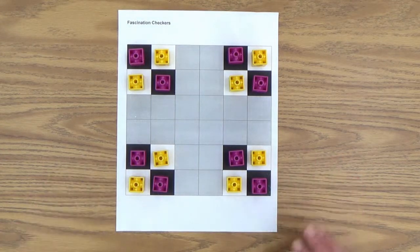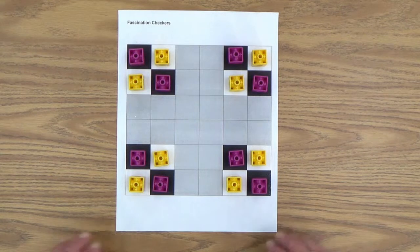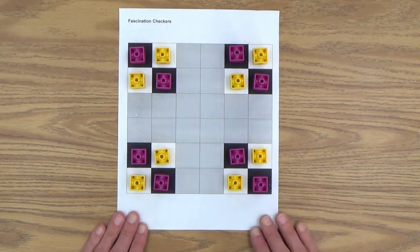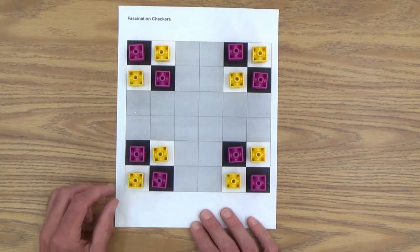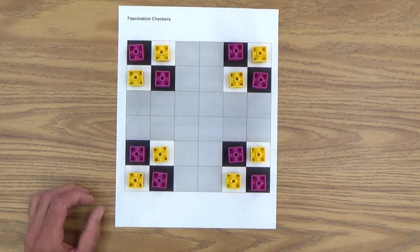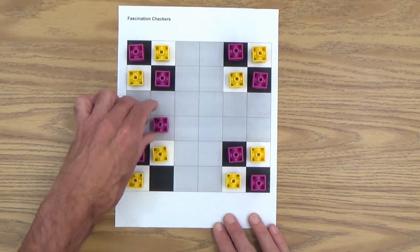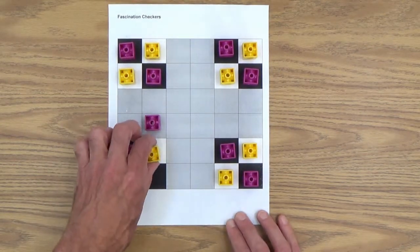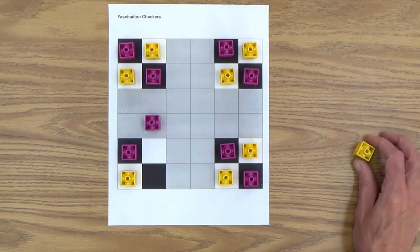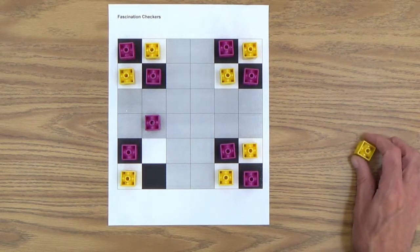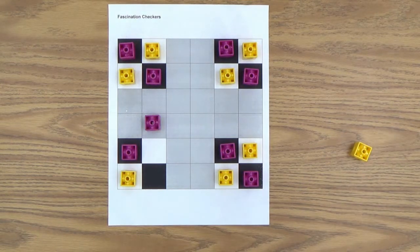All right, let's say purple is the first person moving here. And I hope I can keep the moves straight so I don't get confused who went last. But let's say purple just decides to do this. And I'm going to be purple and I've captured, let's say I'm playing with my daughter and I've captured one of my daughter's yellow game pieces. So that's a move for purple.